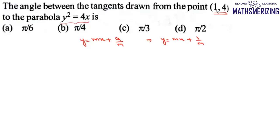Now these tangents they pass through this point which is 1 comma 4. So I'll put y is 4 and x is 1. So this is m plus 1 upon m. So we can write this equation as m square minus 4m and then plus 1 equals 0.